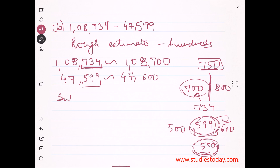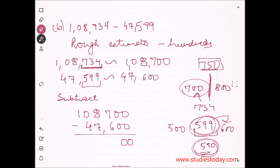Now I perform the subtraction operation: 1,08,700 minus 47,600. Working through the digits with borrowing where needed: 10 minus 4 gives 6, so the answer is 61,100.